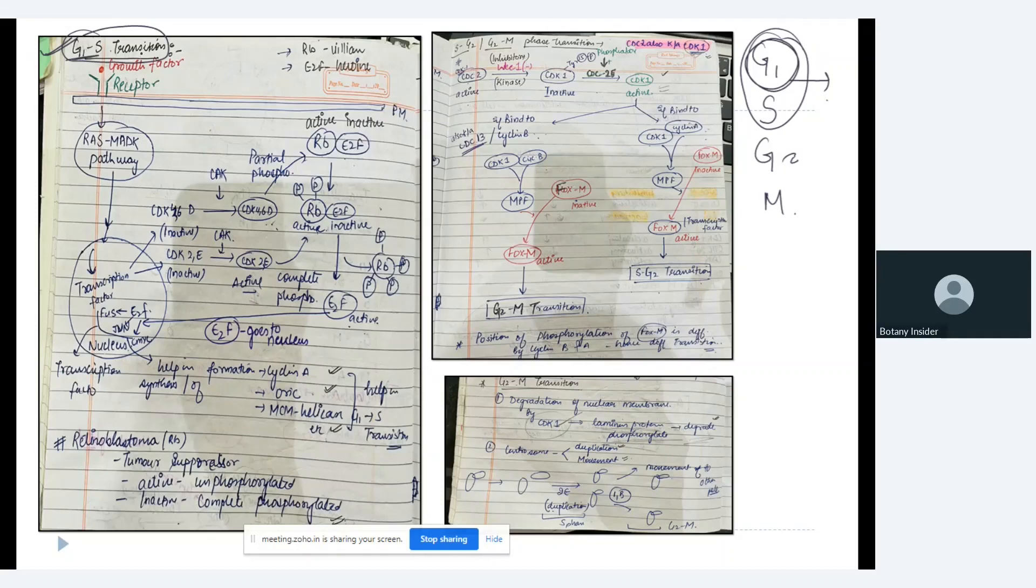In this we have the growth factor and we have the receptor. The receptor is present on the plasma membrane. So now this growth factor comes and binds to the receptor which leads to the activation of RAS MAP kinase pathway. Now what is all this? We will be doing all these pathways in the cell signaling. So now what happens is because of this RAS MAP kinase pathway there occurs the initiation or the activation of some transcription factors. Now because of these transcription factors we have two important elements as the cyclin and the CDKs.